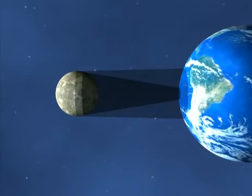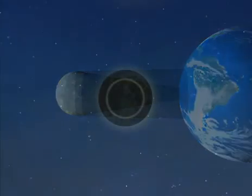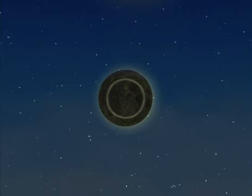The shadow of the Moon is wider, and the Sun takes longer to emerge on the other side. These are the longest eclipses.